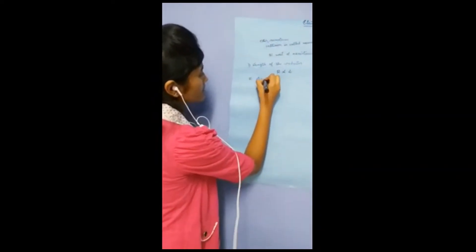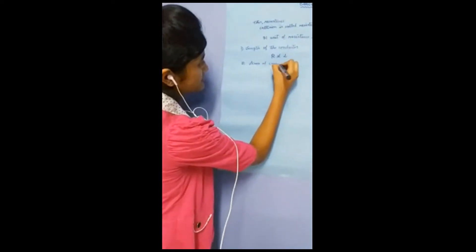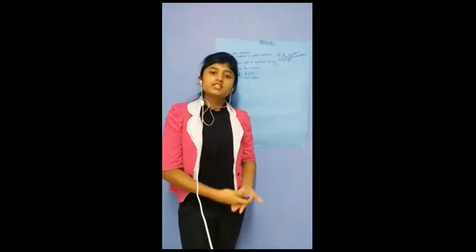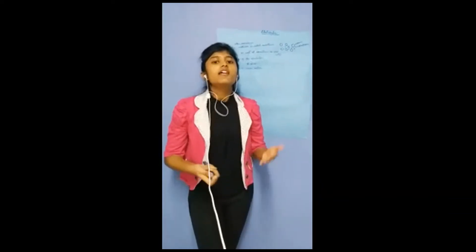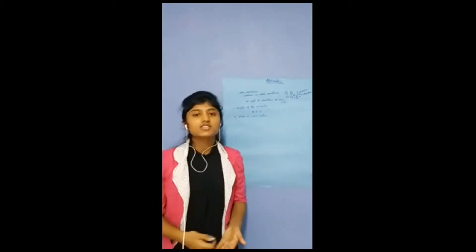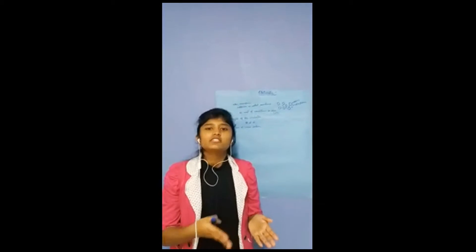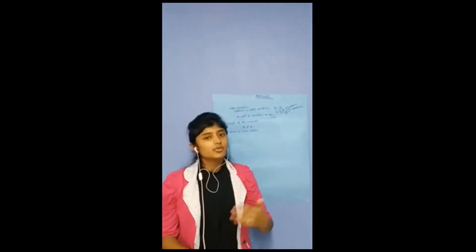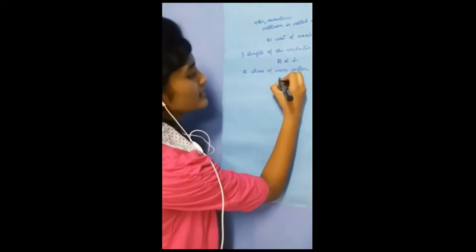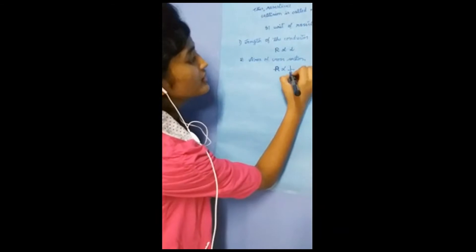The second factor is area of cross section. As the area increases, the resistance decreases, because if the area is more, the electrons will have more space to move so that collisions will be less and resistance decreases. If the area decreases, the resistance increases. By this, we can understand that resistance is inversely proportional to area of cross section.